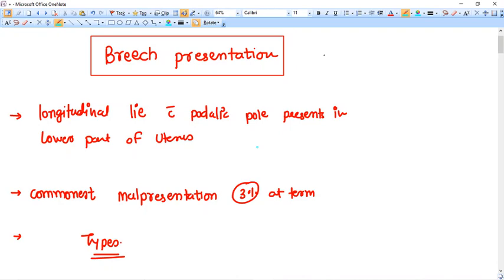What is breech presentation? We have the longitudinal lie but we have the podalic pole of the fetus in the lower part of uterus instead of cephalic part. I am not talking about whether it should be a breech. By the way what is a breech? The buttocks of the fetus along with genitalia, it's called breech. So it's not always that the breech is present in the lower part of uterus, it might be legs. So breech presentation means the podalic pole of the baby is present in the lower part of uterus.